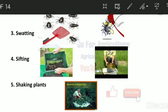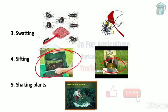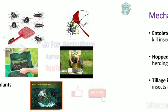In the picture you can see the main materials used for sifting. Next is shaking plants: we place a white cloth beneath the plant and shake the plant so that insects fall onto the cloth, making it easy to collect and kill them. All these methods — hand picking, hooking, swatting, sifting, and shaking plants — require manual labor.